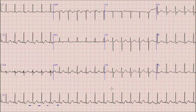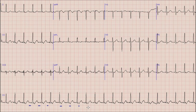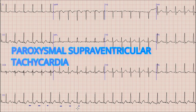The next differential is atrial flutter with fixed AV block. For atrial flutter, there should be P waves at a rate of around 200 to 400 beats per minute. Searching for P waves, we can see that after each QRS complex there are negative deflections — retrograde P waves representing atrial activity. However, the rate of these retrograde P waves is around 150 per minute with one-to-one conduction, so atrial flutter is less likely.